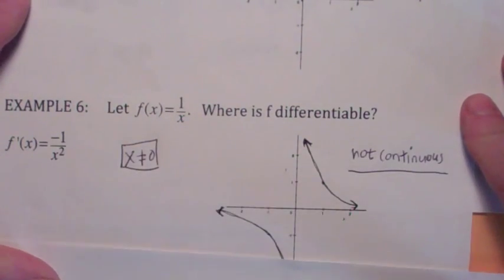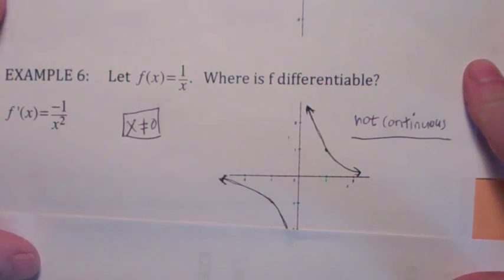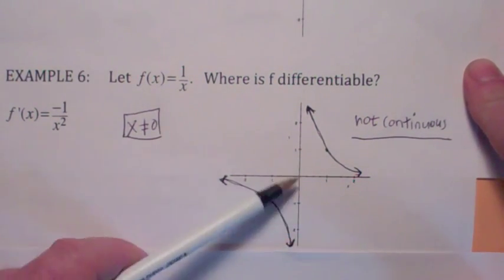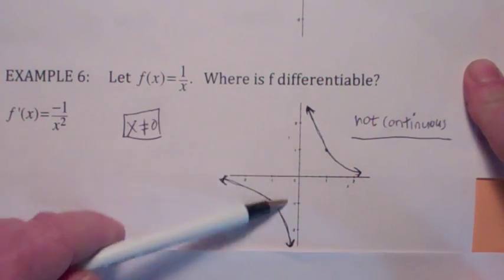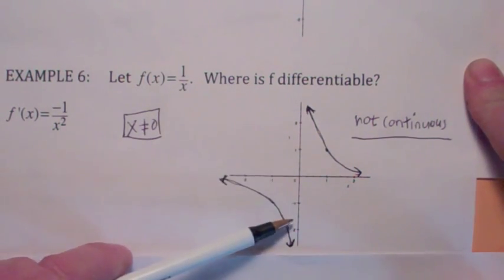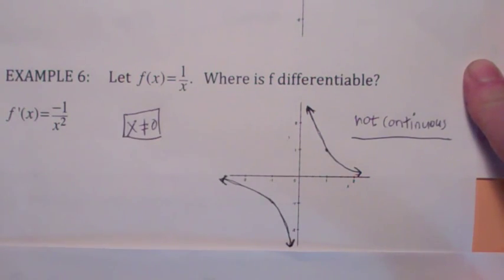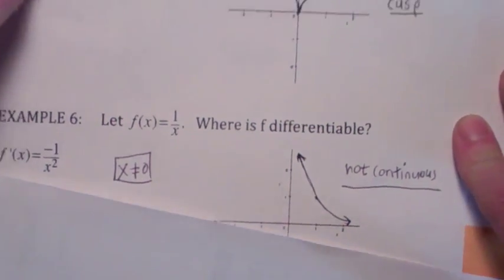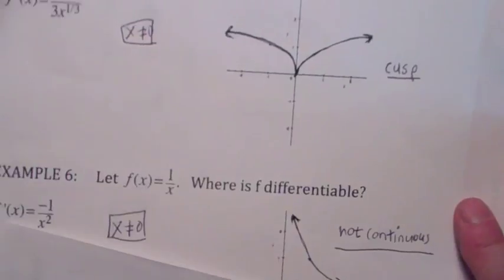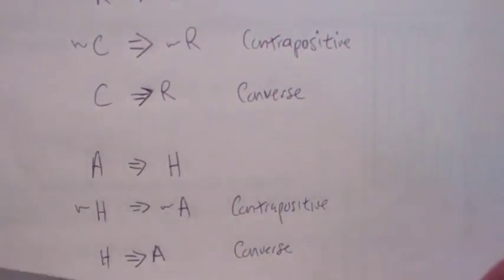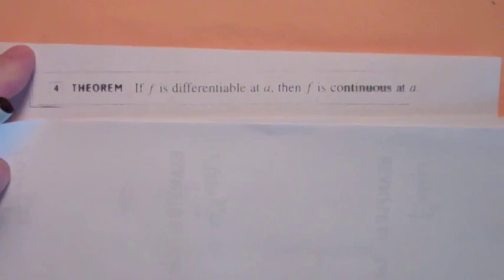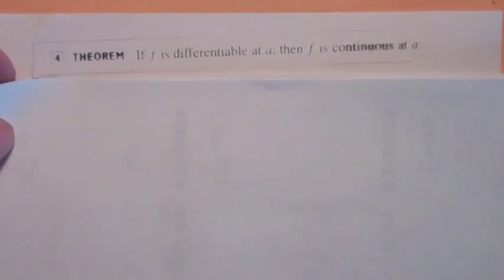Another way that a function can fail to be differentiable is if you have a function that's not continuous — you wouldn't say this function is differentiable at x equals 0. In fact, we have a theorem that actually says that. It relates differentiability with continuity: if a function is differentiable at a point, then it will be continuous there also.